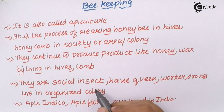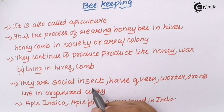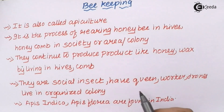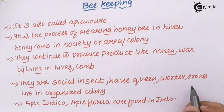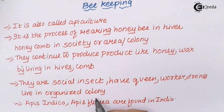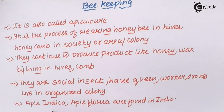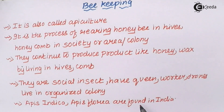Honeybees are social insects that always live in groups. They have a queen, workers, and drones that live in organized colonies. Examples of common honeybees found in India are Apis indica and Apis flora.